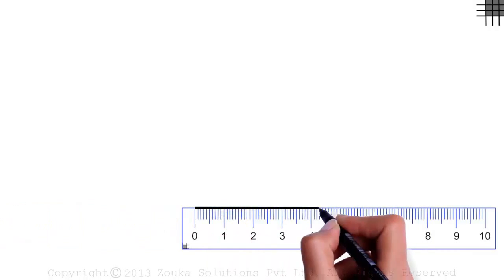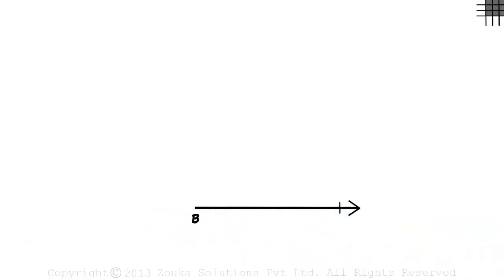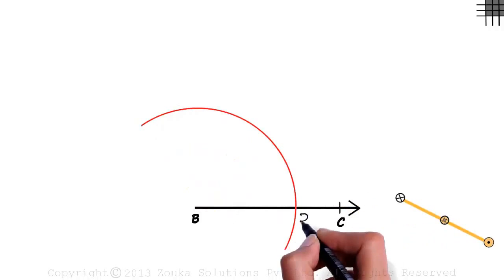Let ray BC be the initial arm of each of the angles we plan to construct. First, let us draw a 60 degrees angle. We keep the compass at point B and with a length little over half this length, we draw an arc from above point B intersecting ray BC at point D.